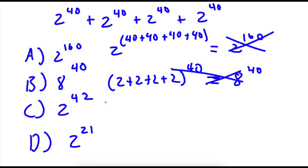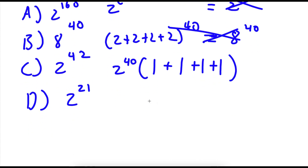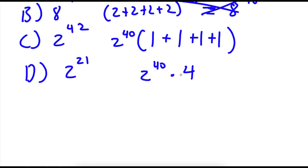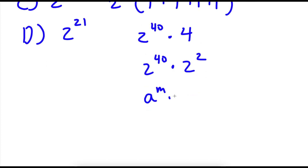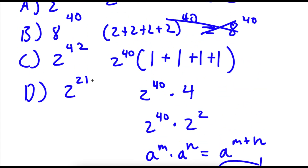Now to get 2 to the power of 42, you first factor out 2 to the power of 40. So you have 2 to the power of 40 times 1 plus 1 plus 1 plus 1. Now 1 plus 1 plus 1 plus 1 is 4, so you have 2 to the power of 40 times 4. And 4 is the same thing as 2 squared. So you have 2 to the power of 40 times 2 squared. Using the rule a to the power of m times a to the power of n equals a to the power of m plus n, you get 2 to the power of 40 plus 2, which equals 2 to the power of 42. So this is actually the right method and the correct answer.